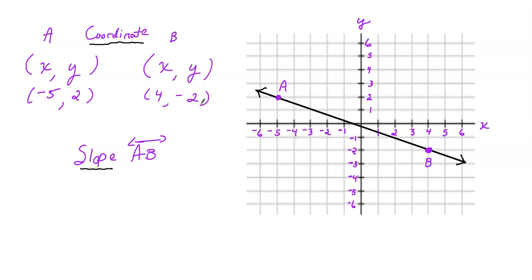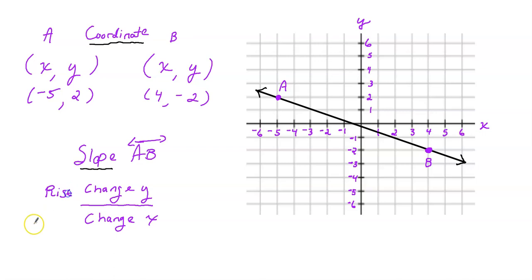Go ahead and pause the video and find the slope of AB. Welcome back. Remember the slope is the change of y over change of x, also known as rise over run. You should notice that this line from left to right is slanting down, so I know the slope is going to be negative right away.